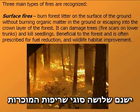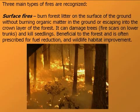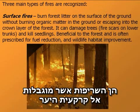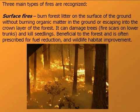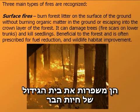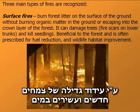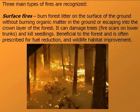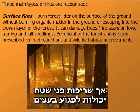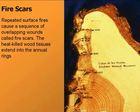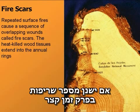There are three major types of fire that are recognized. Surface fires are the fires that are utilized in prescribed burning to reset the forest floor. They reduce fuel and improve wildlife habitat by encouraging the growth of new and more succulent shoots. However, these types of surface fires can damage trees if a period of time goes by with repeated surface fires.